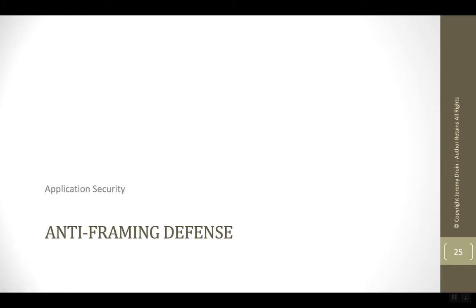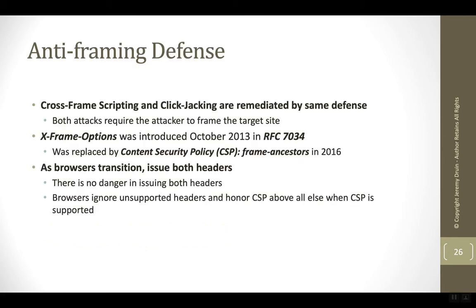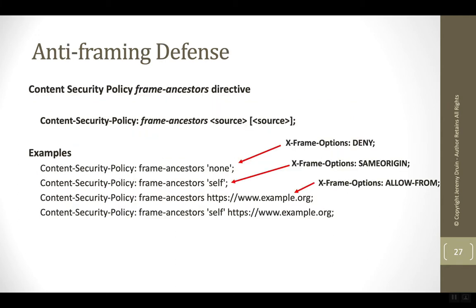Content Security Policy offers an alternative to X-Frame-Options, and in fact is replacing X-Frame-Options as the preferred method for anti-framing defense. In order to stop cross-frame scripting and click-jacking, the site needs to prevent other sites from framing it. X-Frame-Options originally covered this problem in RFC 7034 but has been replaced by Content Security Policy. Right now browsers support both, and Content Security Policy is preferred and is the future of browser-based security controls.